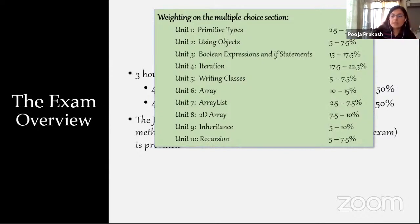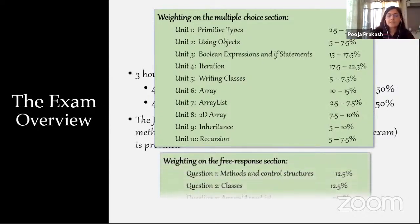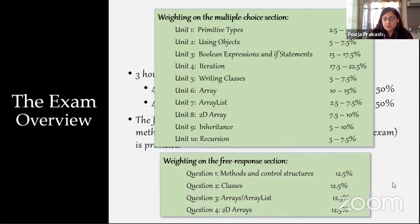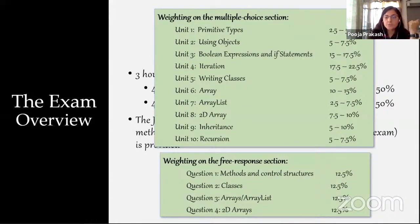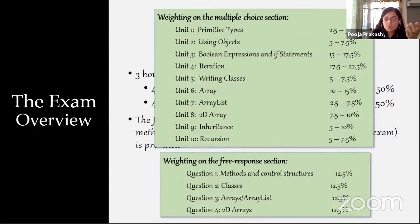In the free response section, methods and control structures cover 12.5 percent, and classes cover 12.5 percent. Equal weightage is given to the four questions you get.